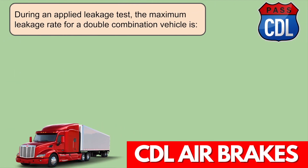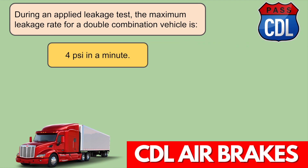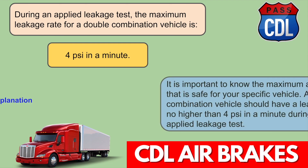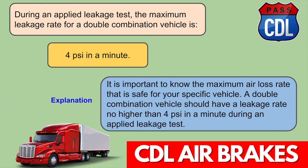During an applied leakage test, the maximum leakage rate for a double combination vehicle is 4 PSI in one minute. It is important to know the maximum air loss rate that is safe for your specific vehicle. A double combination vehicle should have a leakage rate no higher than 4 PSI in a minute during an applied leakage test.